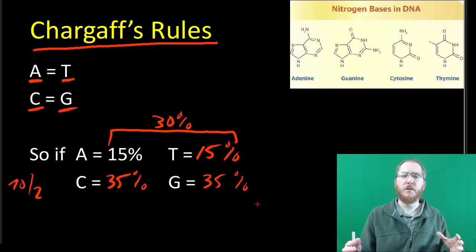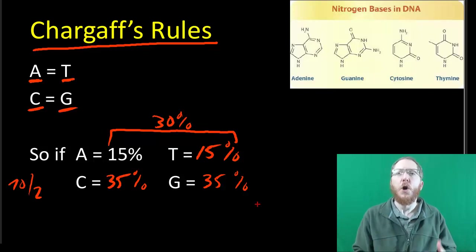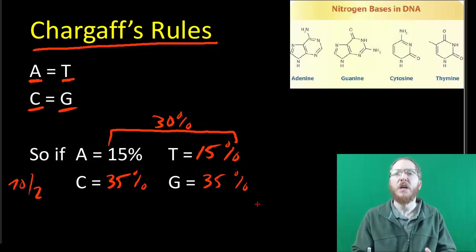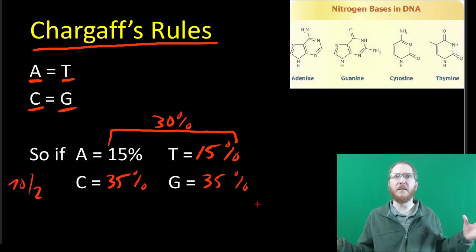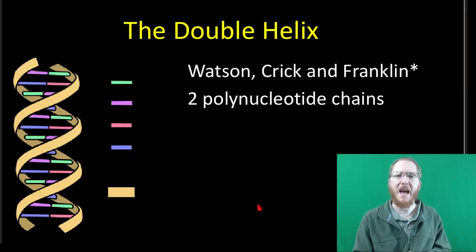So these ratios and this connection between adenine and thymine, and this connection in amount of cytosine and guanine, was something that we were aware of before we figured out the structure of DNA. So it was one of the evidences that we used to try to figure out how DNA is assembled.